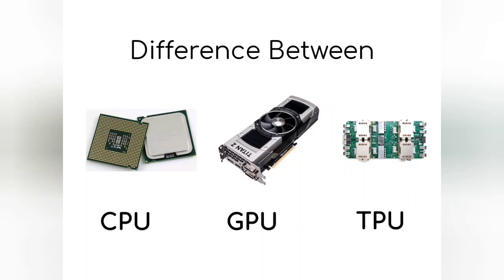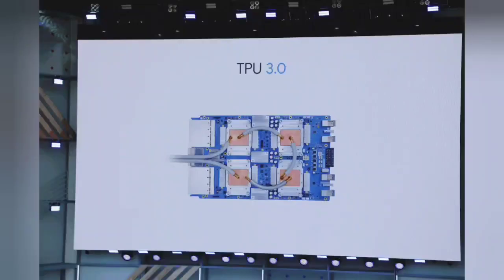Introduction. A tensor processing unit TPU is an accelerator application-specific integrated circuit ASIC developed by Google for artificial intelligence and neural network machine learning. With machine learning gaining its relevance and importance every day, the conventional microprocessors have been unable to effectively handle the computations, be it training or neural network processing. The graphical processing unit GPU, with their highly parallel architectures designed for graphic processing, proved to be more useful than CPUs but somewhat lacking to counter such situations. Google developed TPU which would be used by its TensorFlow artificial intelligence framework.